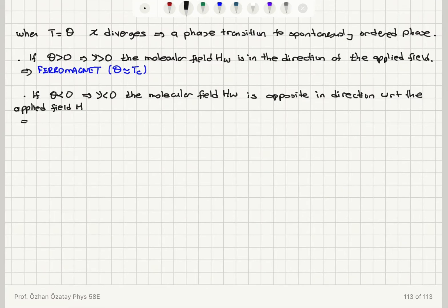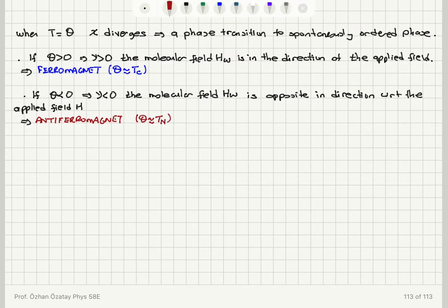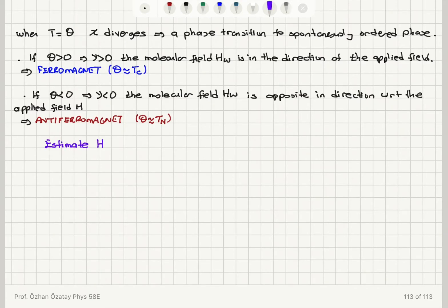A negative theta implies we are talking about an anti-ferromagnet phase transition, and theta is roughly the Néel temperature — the critical temperature for the anti-ferromagnet to paramagnet phase transition. So we can estimate the Weiss molecular field.